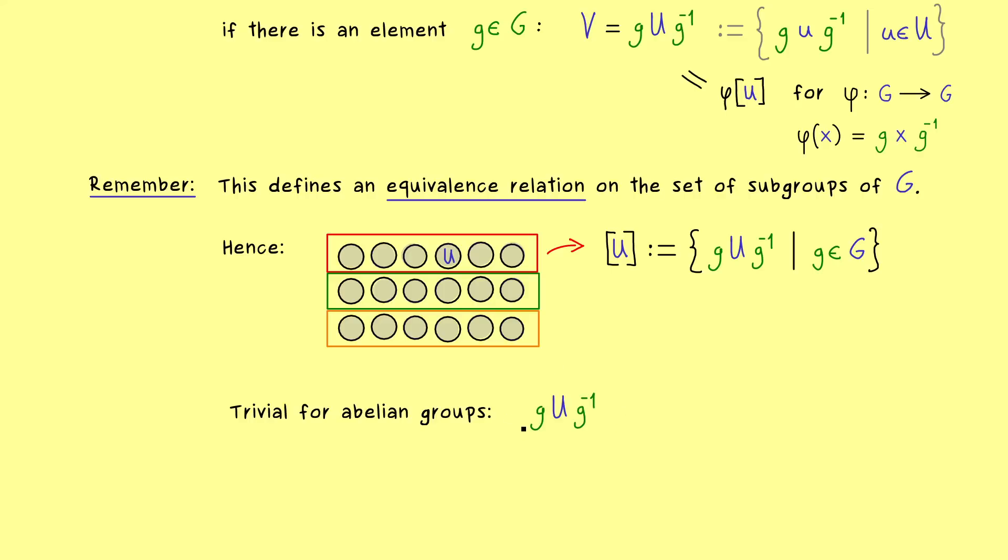There the commutativity simply destroys this construction here. By using the set notation it's simply to see we can just exchange the order here in the middle. And then we have g times g inverse which is the identity element. Hence the only thing we get out here is U itself again.